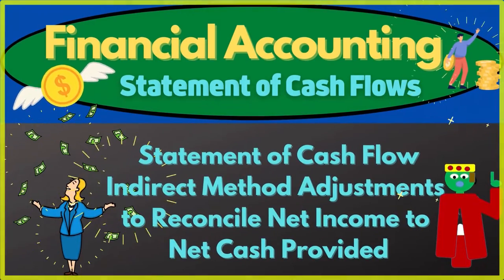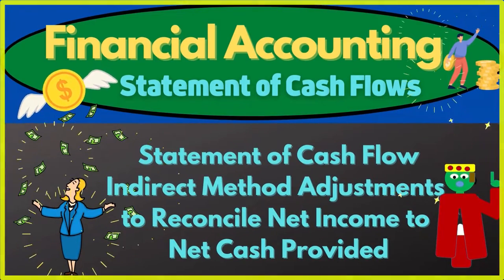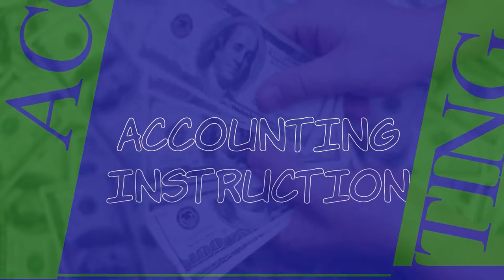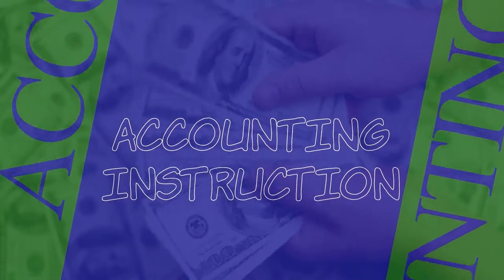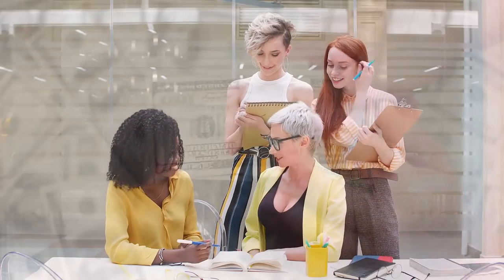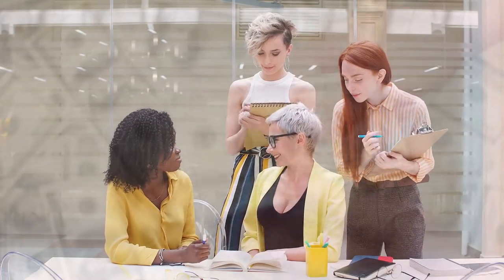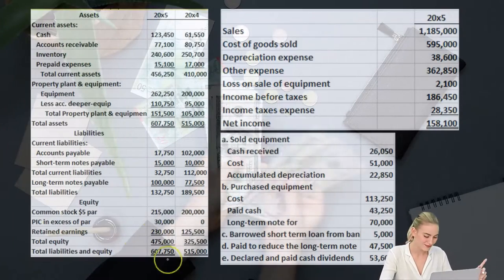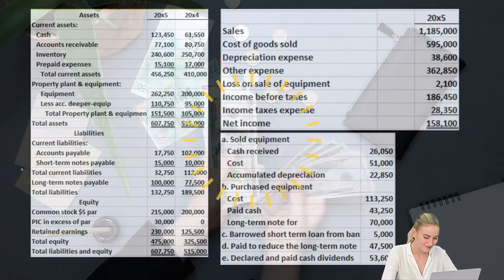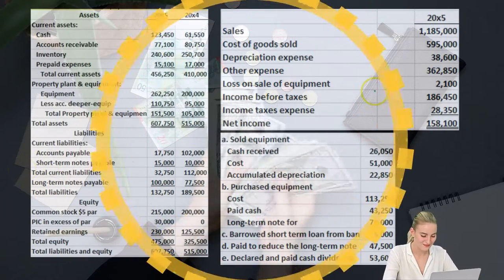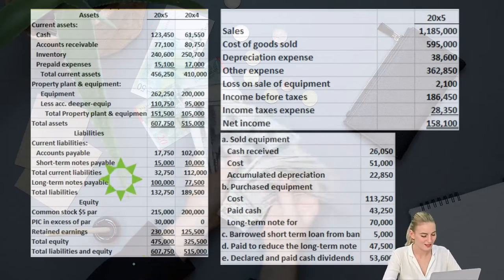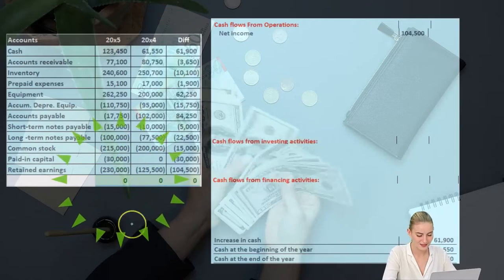In this presentation, we will continue putting together a statement of cash flows using the indirect method, focusing on adjustments to reconcile net income to net cash provided by operating activities. This is the information we will be using: the comparative balance sheet, the income statement, and added information. We took this comparative balance sheet to create our worksheet.